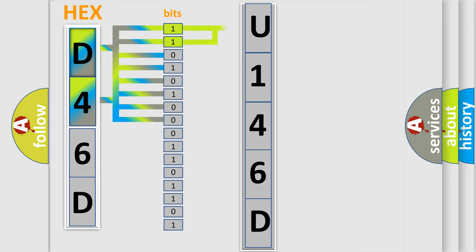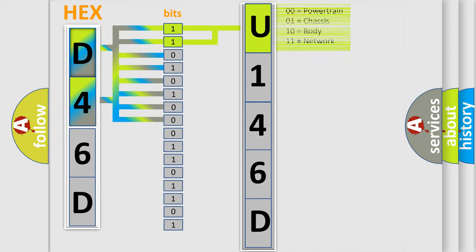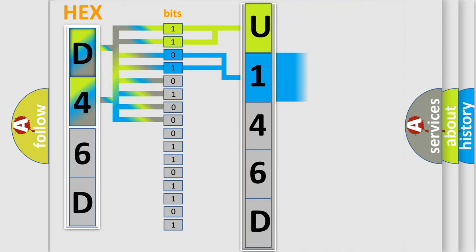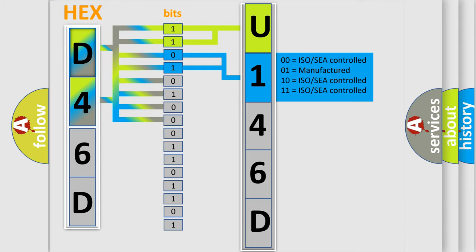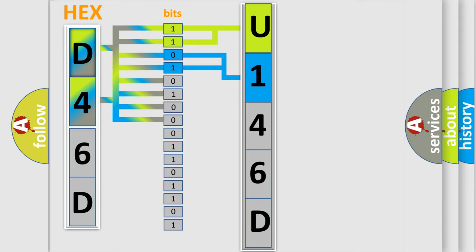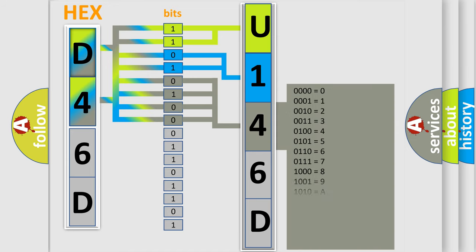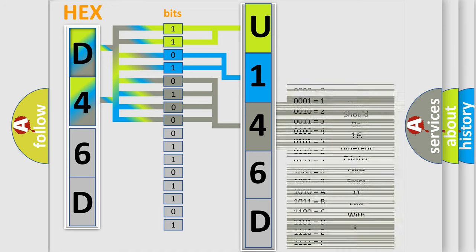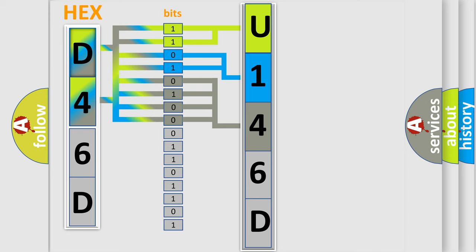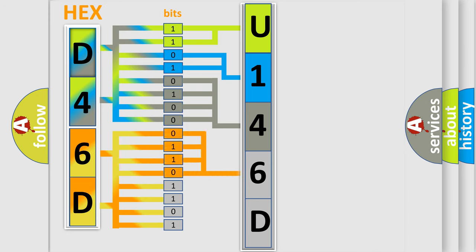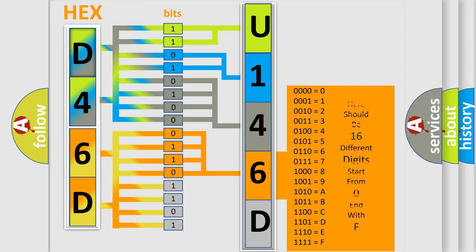By combining the first two bits, the basic character of the error code is expressed. The next two bits again determine the second character. The last bits of the first byte define the third character of the code. The second byte is composed of a combination of eight bits — the first four bits determine the fourth character, and the combination of the last four bits defines the fifth character.